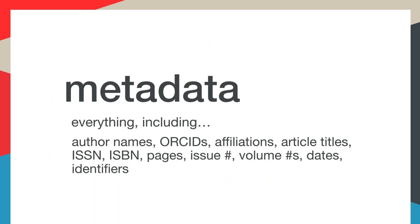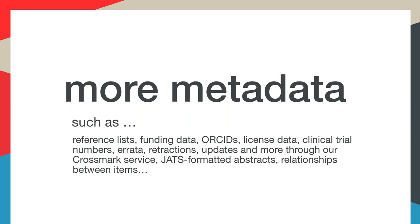When you register your content, you need to send us basic citation metadata for every item that you register — enough information to distinguish or make your content unique from anyone else's. This includes information like titles, authors, publication dates, issue numbers, ISSNs and ISBNs, and anything else that describes the content you're registering. We have minimal requirements because we need to support a range of publication practices, but we ask that you send us as much metadata as possible and that it's accurate and clean. The better your metadata is, the more likely that your DOIs will be discovered and shared along with your content.